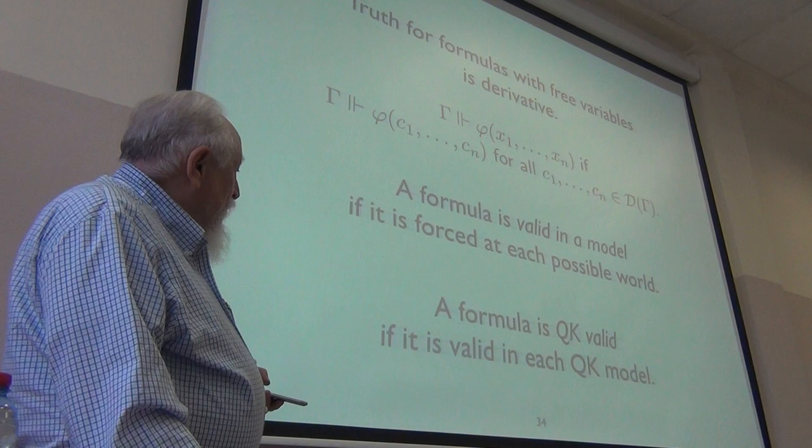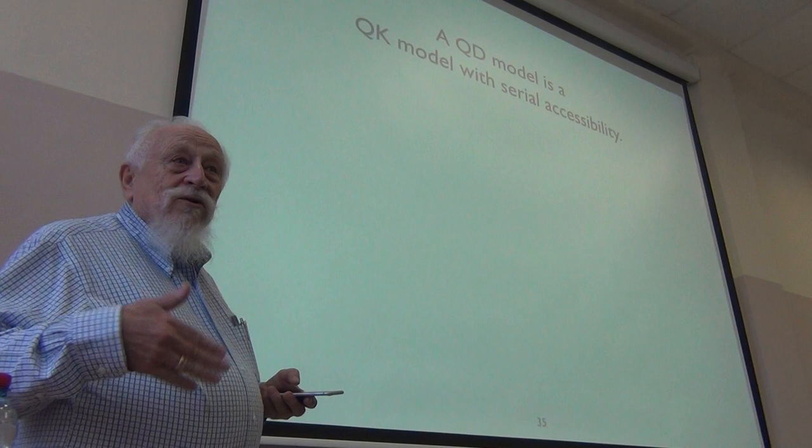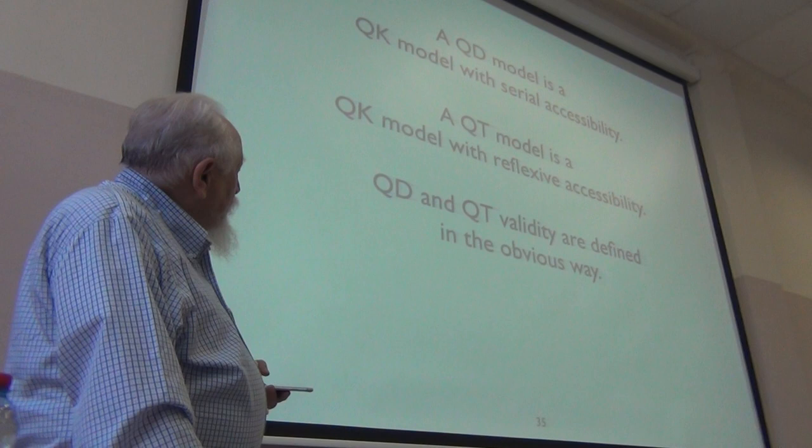QK has no special conditions on the accessibility. A QD model will require seriality. Every world has a world accessible from it. QT will require reflexivity exactly like D into T. And we've got notions of validity for that.